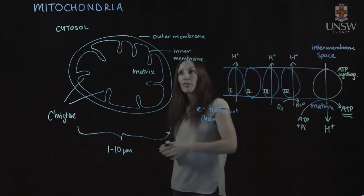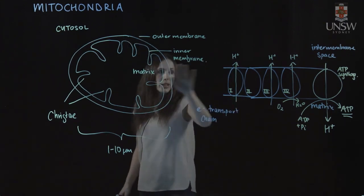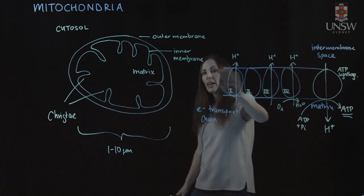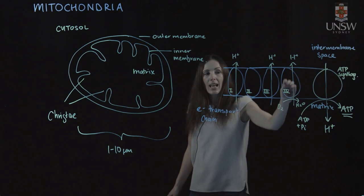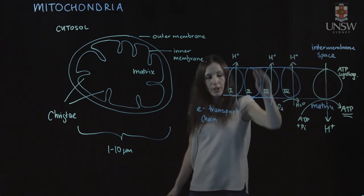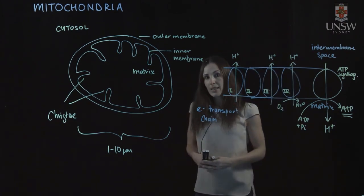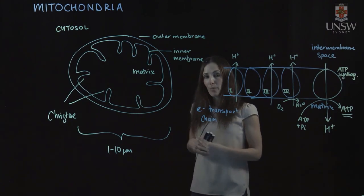So the structure of a mitochondria is really important to allow this process to happen because of that inner mitochondrial membrane, which allows us to have a different concentration of ions across it because it's selectively permeable.